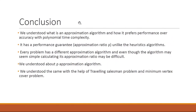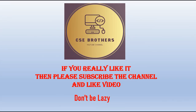In conclusion, approximation algorithms prefer performance over accuracy with polynomial time complexity, and unlike heuristics, they come with a performance guarantee — the approximation ratio ρ. Every problem has a different approximation algorithm, and calculating the approximation ratio can be difficult, making this a research-level topic. We understood this through the vertex cover and traveling salesman problem examples. If you liked this video please subscribe and like — it takes one or two seconds but is very important for us. Thank you.